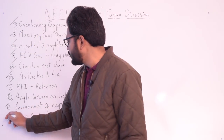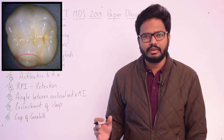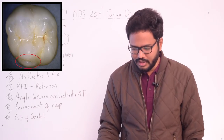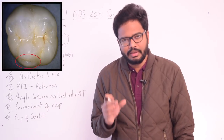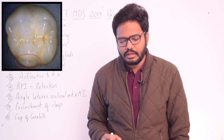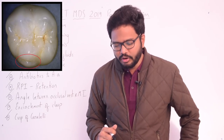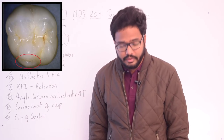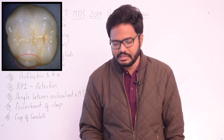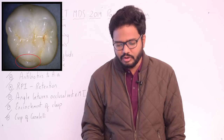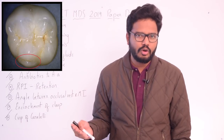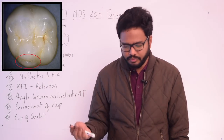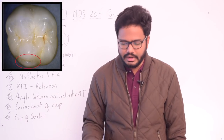Now the final topic — the cusp of Carabelli. We all know it's found in the maxillary first permanent molar on the mesopalatal or mesiolingual cusp. Also known as the Carabelli tubercle or tuberculum anomaly of George Carabelli, it was first described in 1842 by Hungarian scientist George Carabelli. It is a morphological variation taking the form of a fifth cusp, or it can grade down to a series of grooves, depressions, or pits on the mesial portion of the lingual surface, lingual to the mesiolingual cusp.